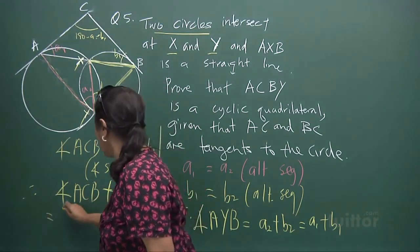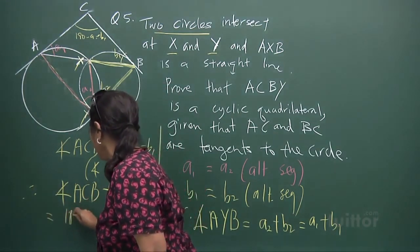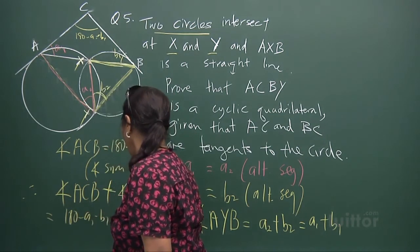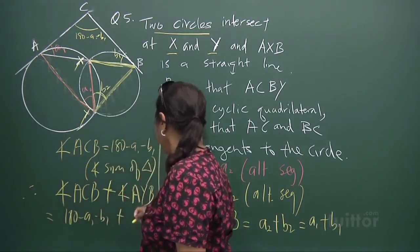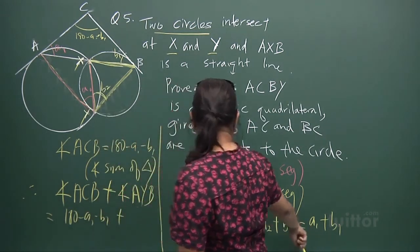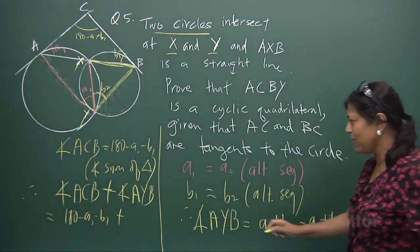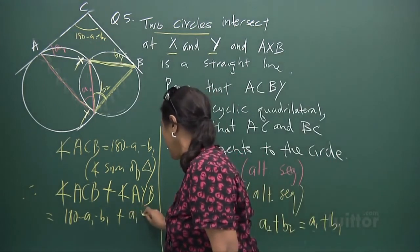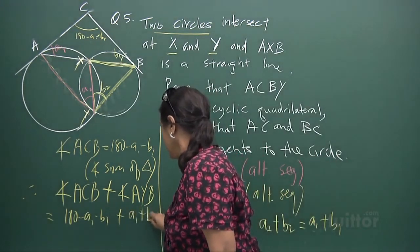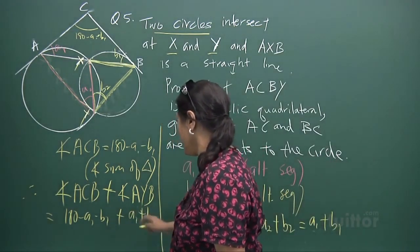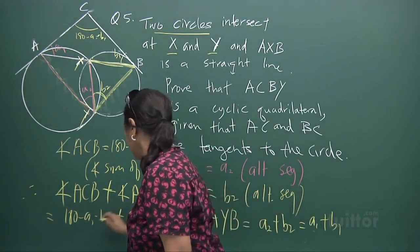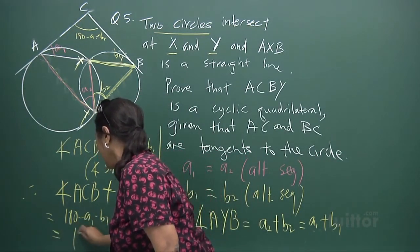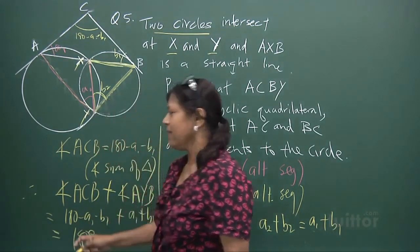ACB is 180 minus A1 minus B1, and angle AYB is A1 plus B1. Write it down — A1 plus B1 cancels, and you get 180 degrees.